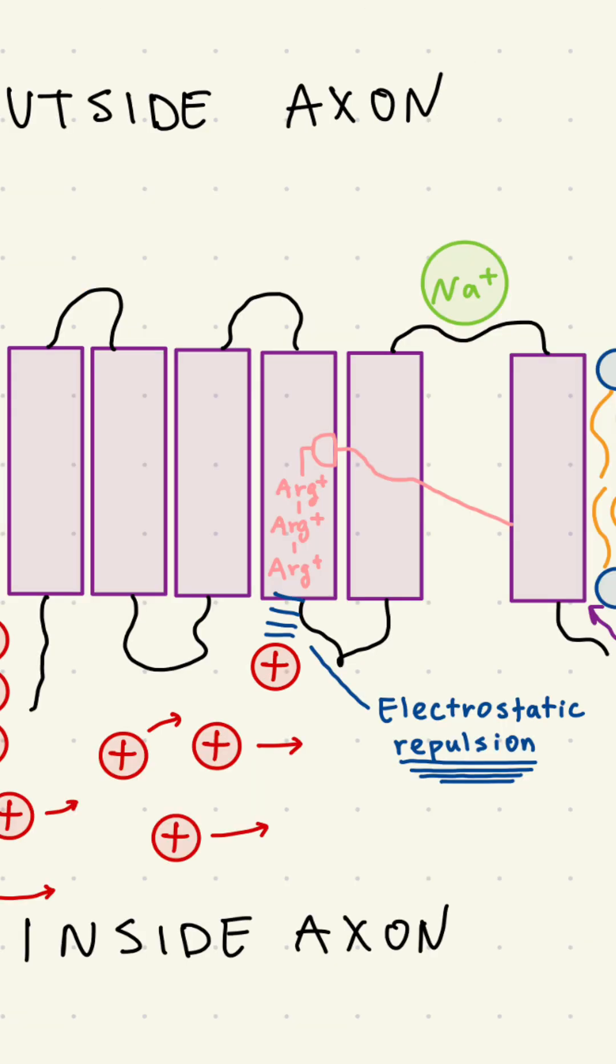Zooming in on the voltage-gated sodium channel, we see that it has this little arm composed of arginine residues, which, if you remember, the amino acids are positively charged.